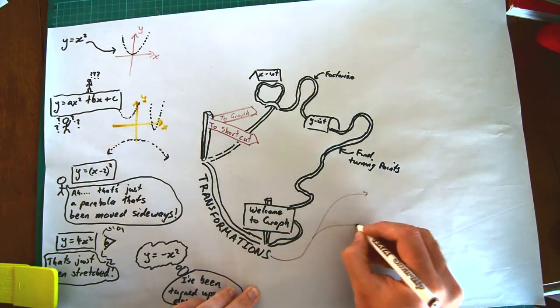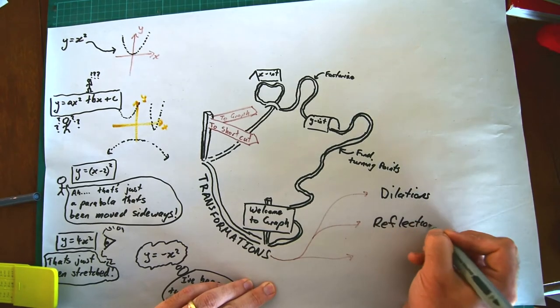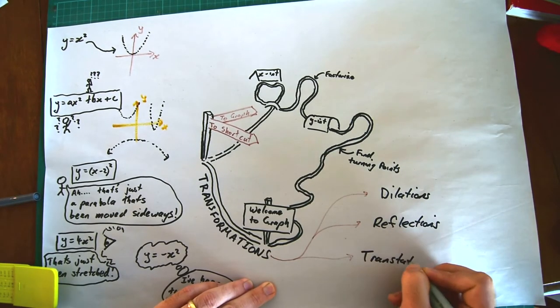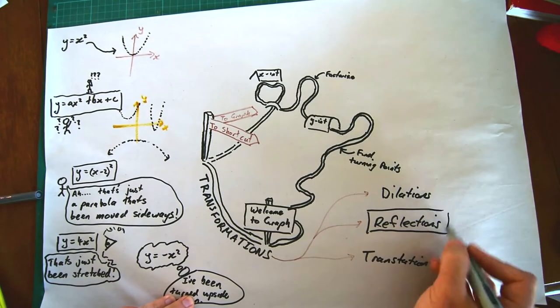There are three main transformations that we're going to look at: dilations, reflections, and translations. In this video we're going to look at the simplest of the three, which is reflections.